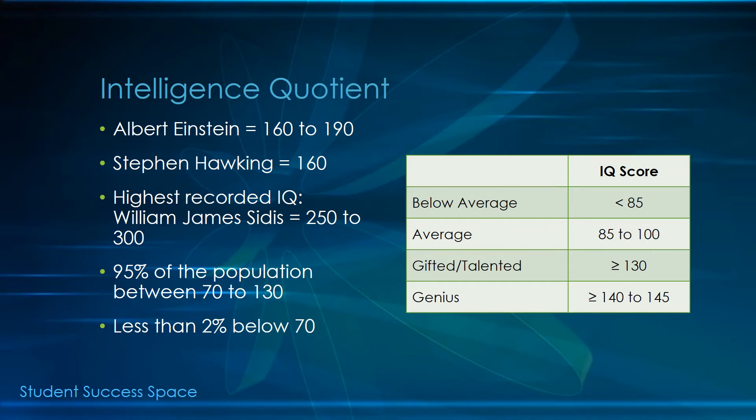Just to have an idea of what that means, Albert Einstein is estimated to have had an IQ score of 160 to 190. Stephen Hawking has an IQ score of 160. The highest recorded IQ score belongs to William James Sidis, who had a score of 250 to 300.